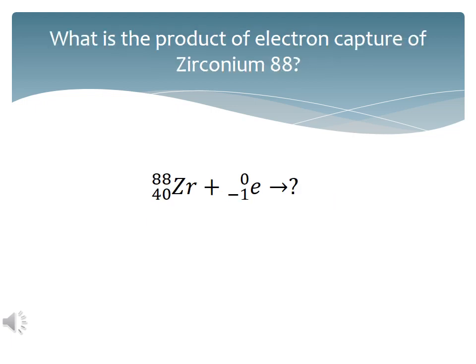Remember, mass number doesn't change. Atomic number goes down by 1. So find element 39 on the periodic table. Zirconium-88 becomes yttrium-88.